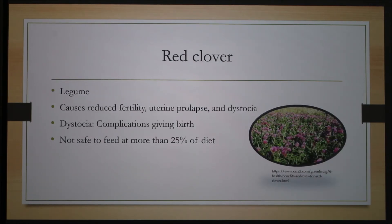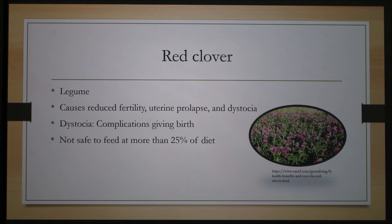Another fairly common environmental estrogen is red clover, a member of the legume family and fed for its high protein content. Effects of red clover include reduced fertility, uterine prolapse, and dystocia, or problems giving birth. Red clover is not safe to feed at more than 25% of the total diet to lactating, gestating, or cycling animals meant to be bred. It also negatively affects stressed individuals more frequently.